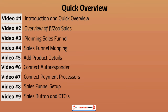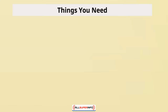At that point you should have all the information such as your front-end offer and one-time offers, and have a good idea of how things are laid out. Last but not least, video number nine is sales buttons and one-time offers. In order to connect your front-end offer to your one-time offers you need the sales button, and then if somebody says no to a one-time offer, you need to know how to redirect them.